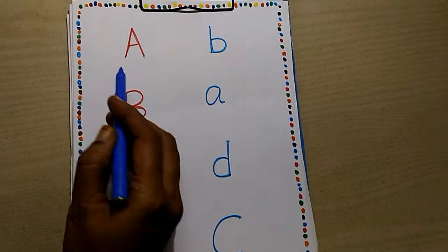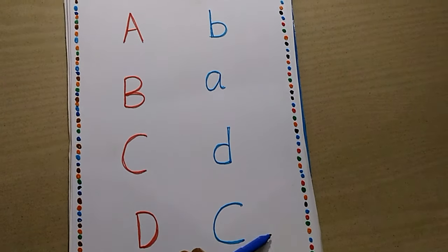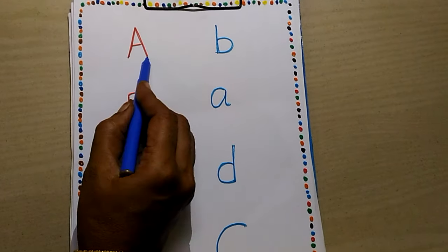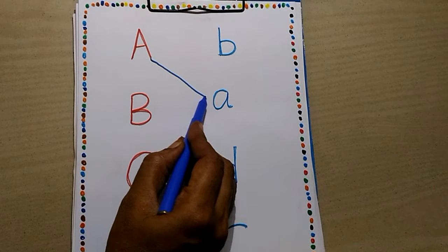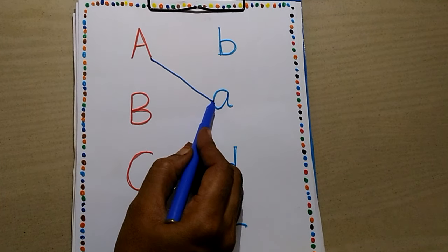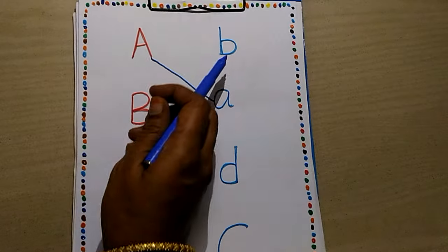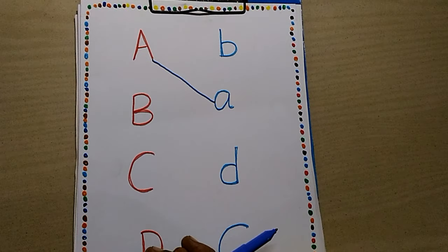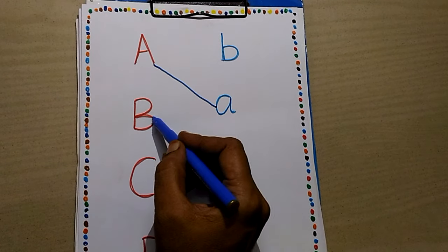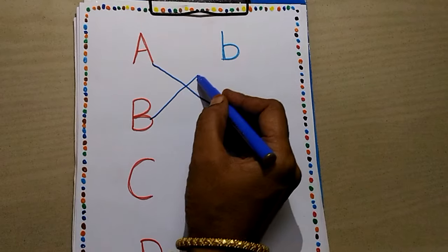A — where is small a here? Here. Match it. Capital A, small a. Then B. Where is B here? Here. Capital B, small b.